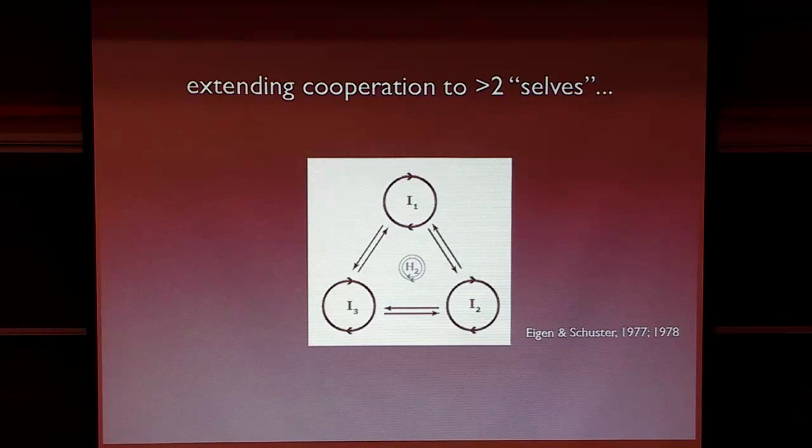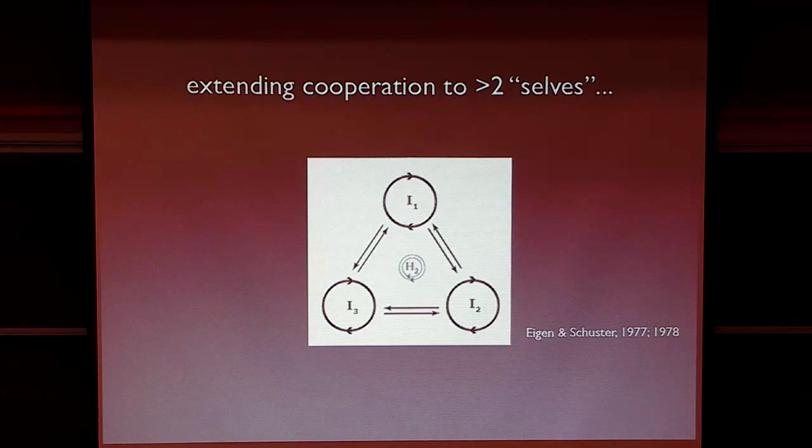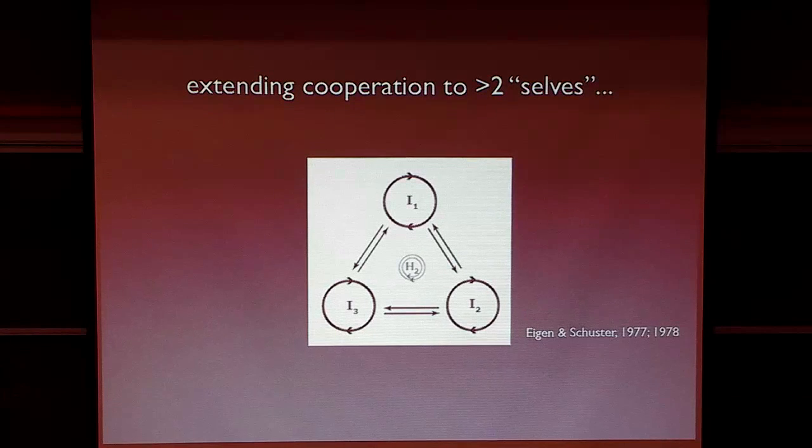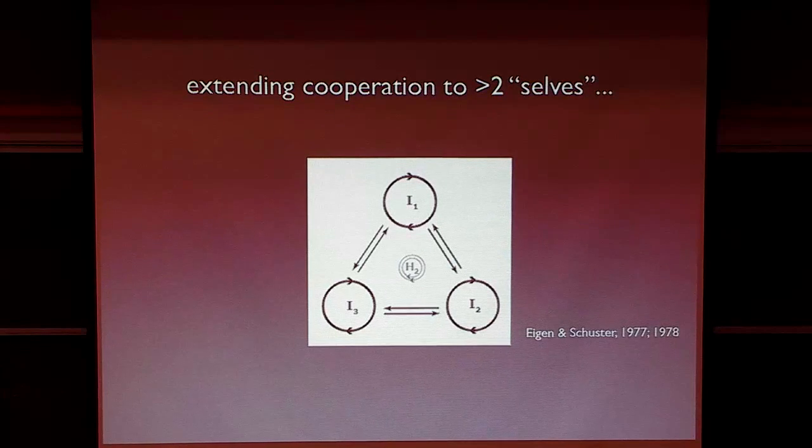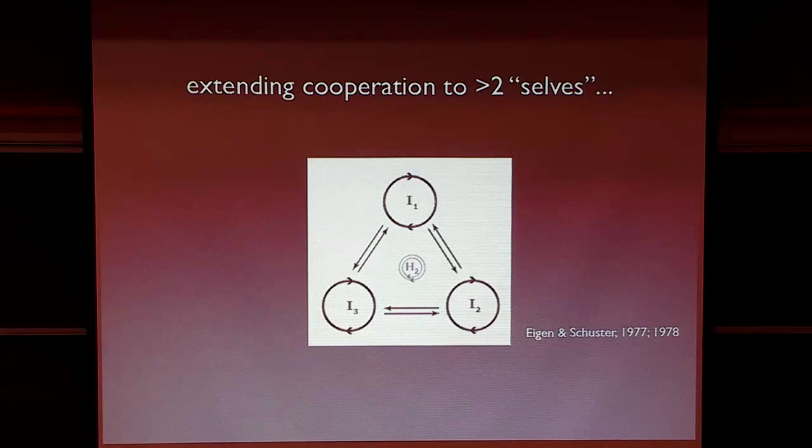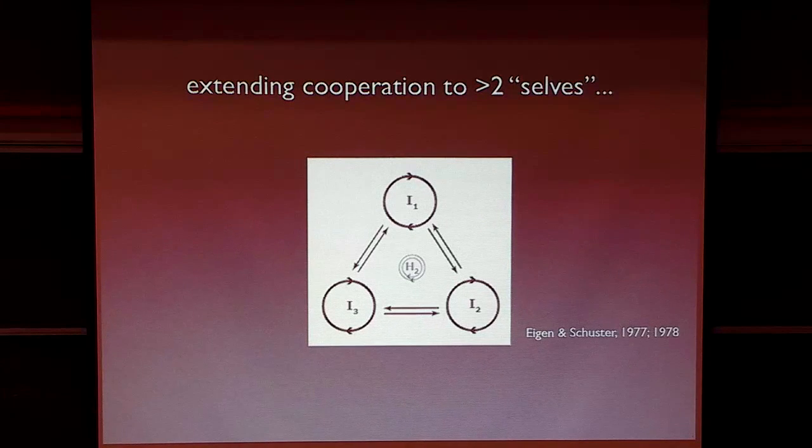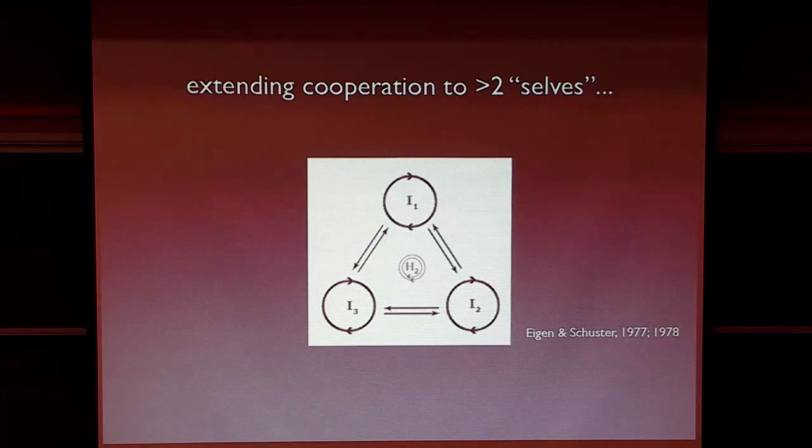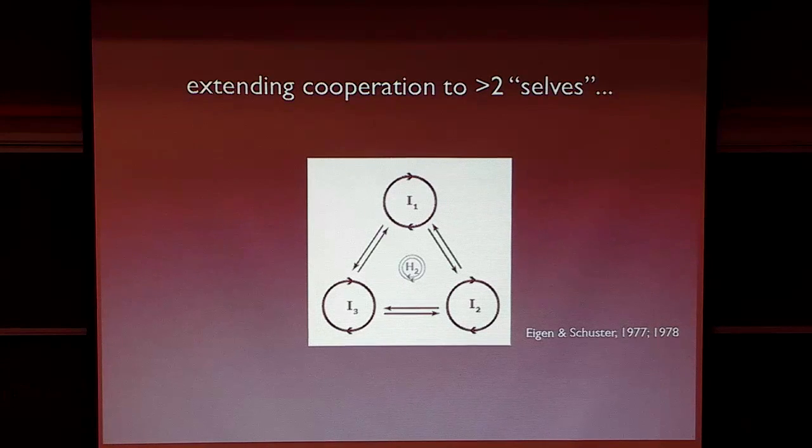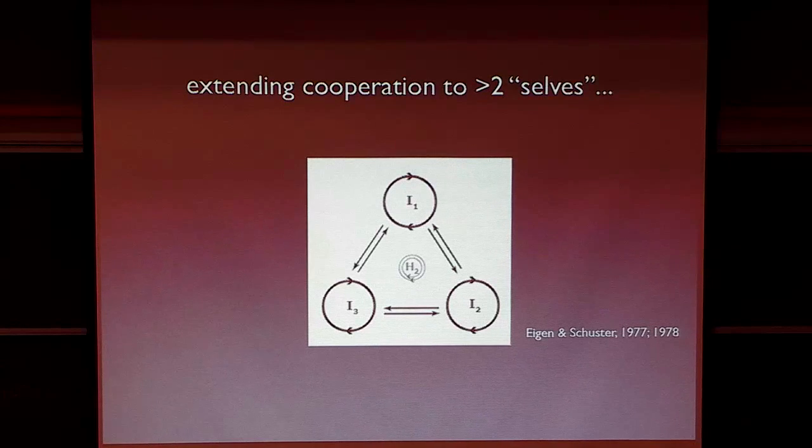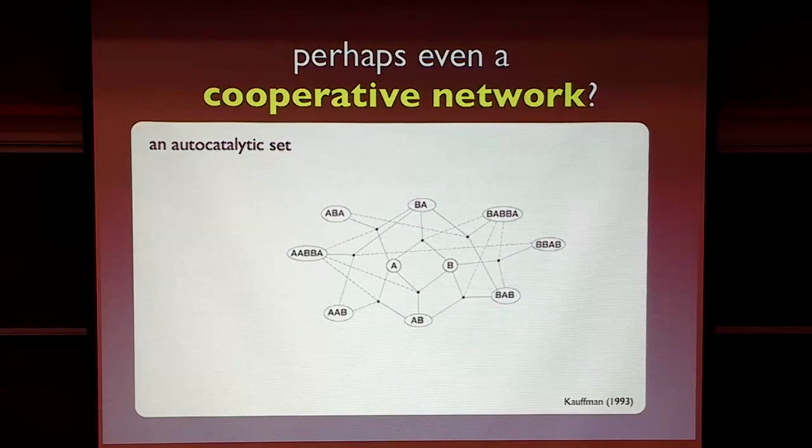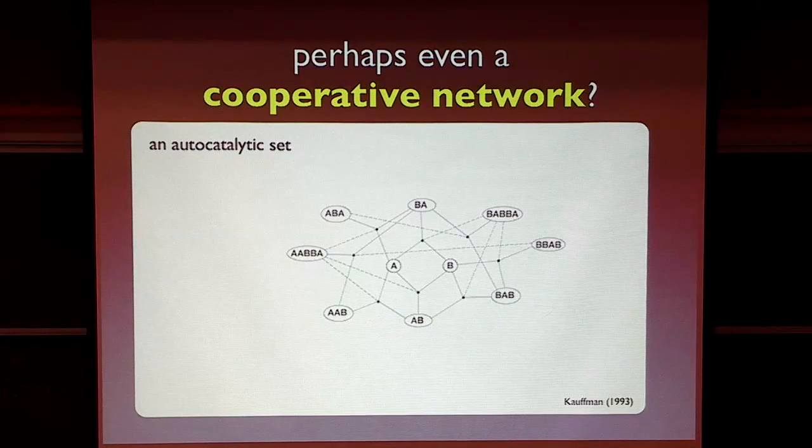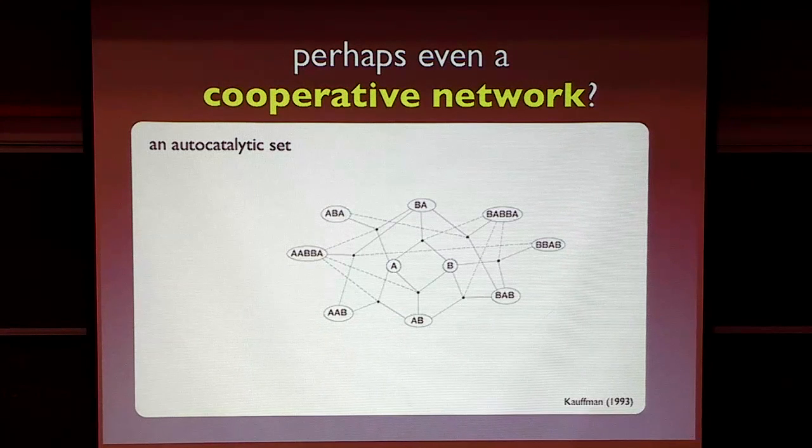And so maybe we can even take this notion of two systems interacting to more than two. This is a drawing that appeared in one of Manfred Eigen and Peter Schuster's papers in the 1970s. This is the notion of three systems interacting, cooperating to establish their own replication.